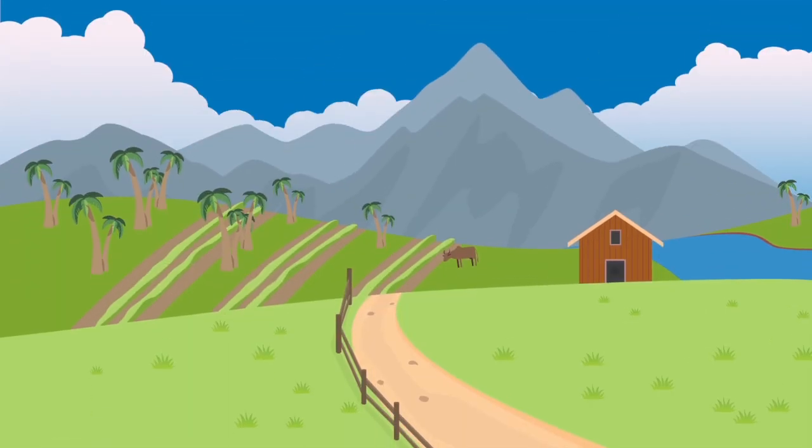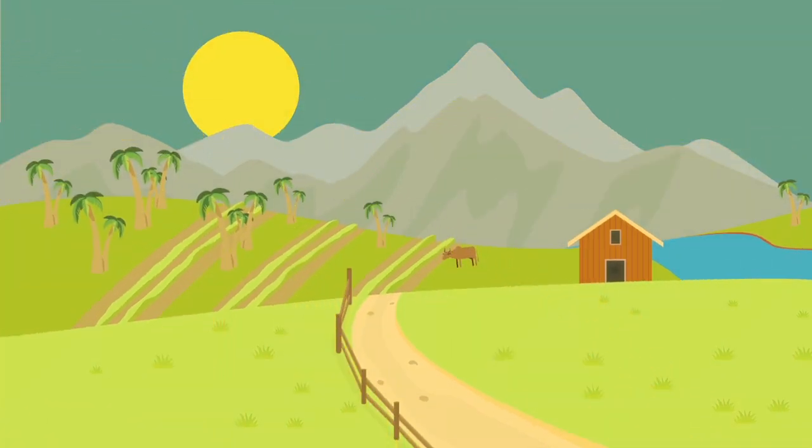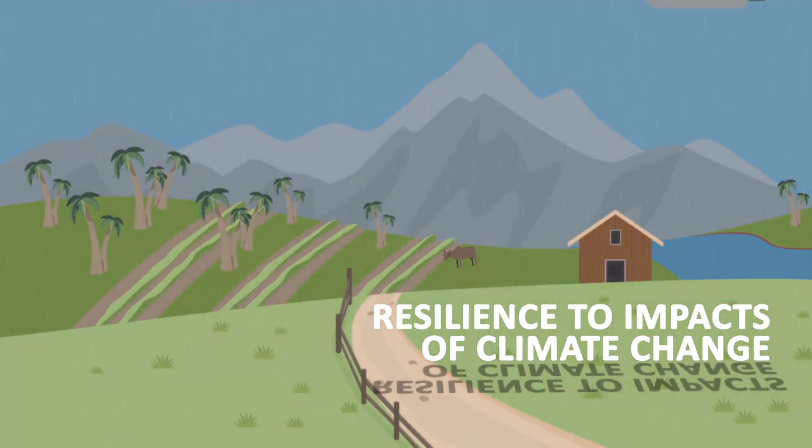A landscape whose soils, water, and climate regulation are providing full environmental benefits is also a landscape that provides resilience to impacts of climate change.